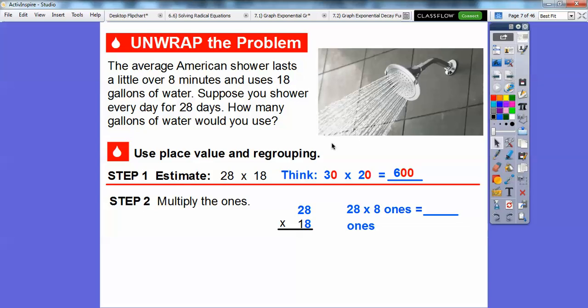Now let's multiply the ones here. We're going to multiply 28 times 18. We're going to multiply the whole 28 times the 8 ones right here. So 8 times 8 is 64, so I carry the 6 right here. And then I do 8 times 2 is 16, and I add the regrouped tens right here. So 16 plus that 6 gives us 224 right there.